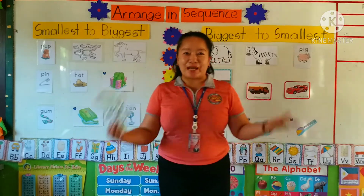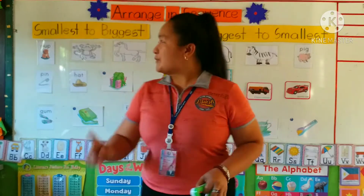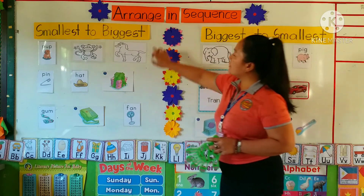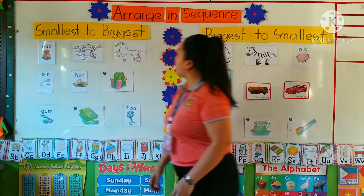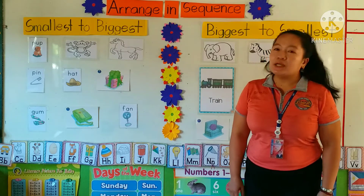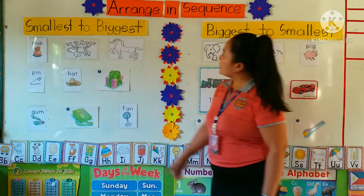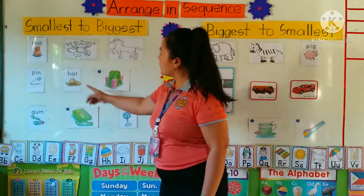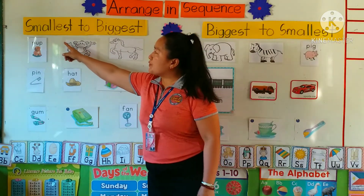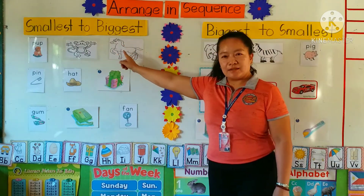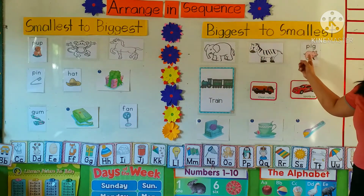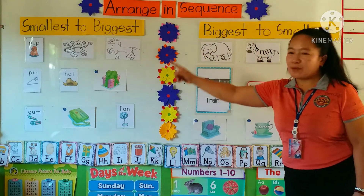Okay, very good! Now let's start with our topic for today: Arrange and Sequence. What is it? We need to arrange all these pictures and sequence them. We need to start from Smallest to Biggest, and we can also arrange from Biggest to Smallest.